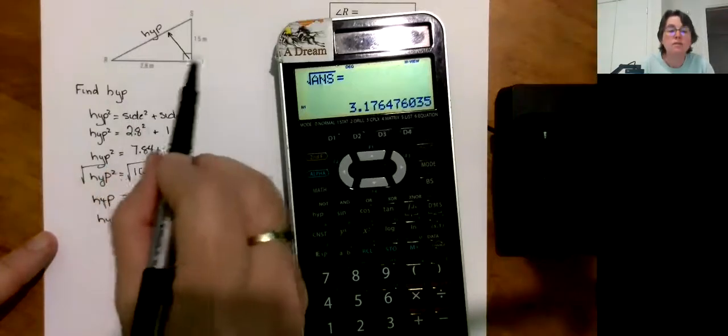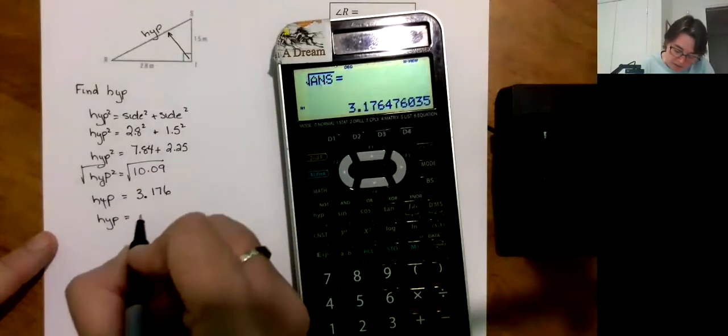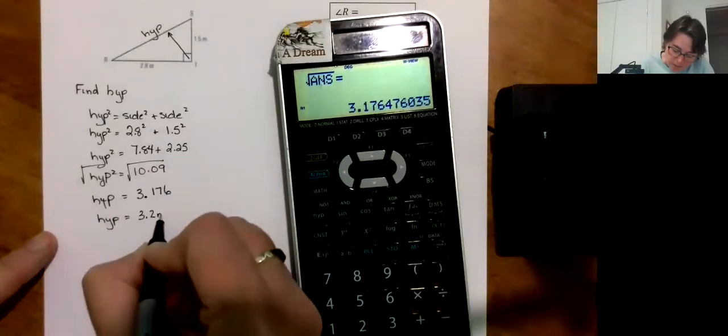Now, remember this is hypotenuse squared. This side is 2.8 meters and this is 1.5. That can't be 10. You guys remember to calculate, take the square root of both sides. So on mine it's second function. Okay, so hypotenuse is equal to 3.176. Let's see, these guys are using one decimal place. So I'm going to do the same. 3.2 meters.